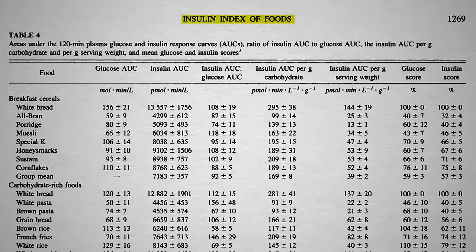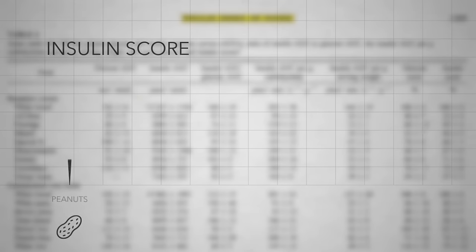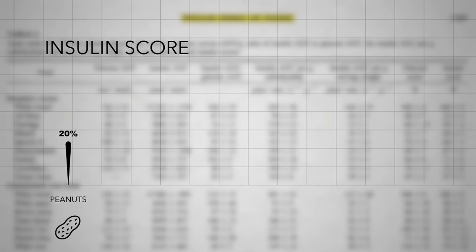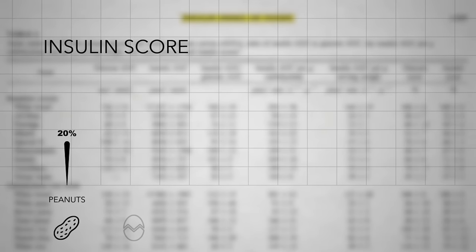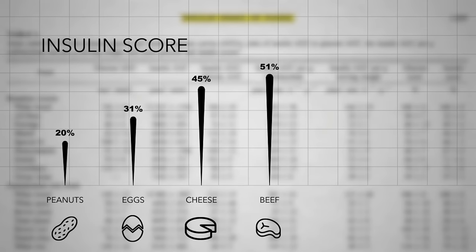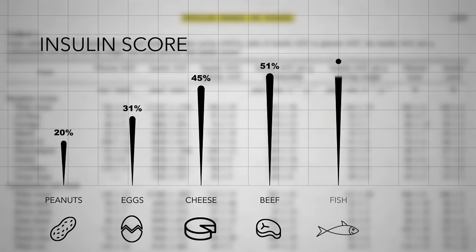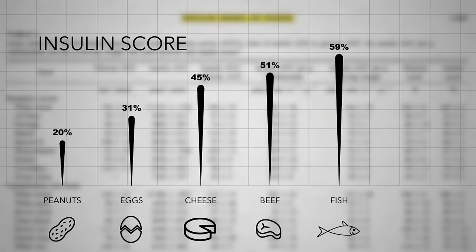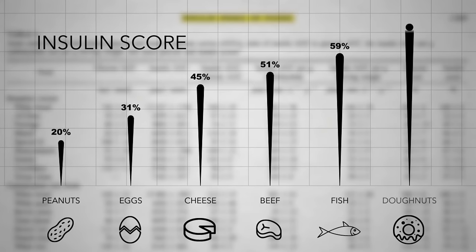Here's the insulin score of a low-carb plant food like peanuts compared to common low-carb animal foods—eggs, cheese, and beef. But fish was even worse, closer to doughnut territory.